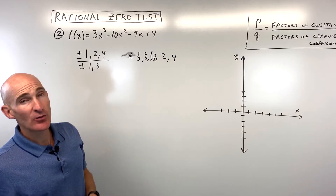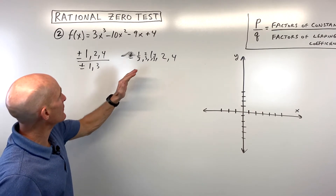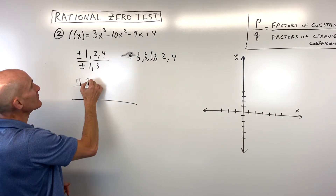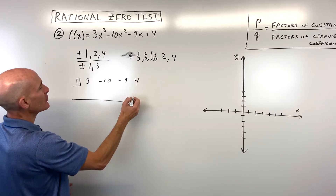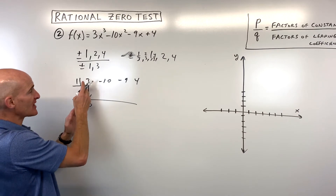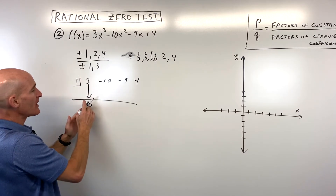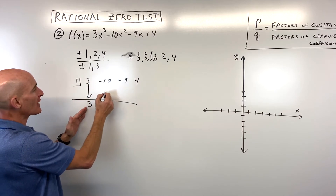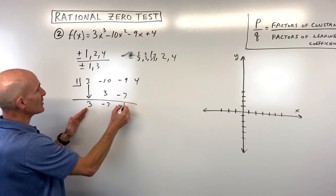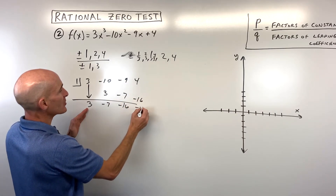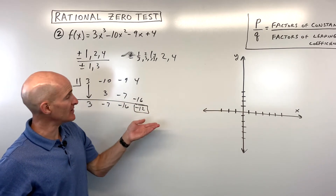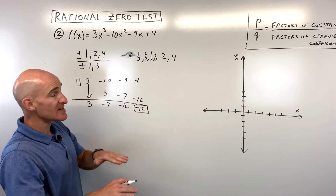Now let's test them. I'll start with the small number 1. We do our synthetic division with coefficients 3, negative 10, negative 9, and 4. Drop down the first number, then multiply on the diagonal, add straight down, multiply on the diagonal, add straight down, multiply on the diagonal, add straight down. If the last number is 0, that tells us 1 is a zero. But in this case it didn't come out to 0, so 1 is not a zero.